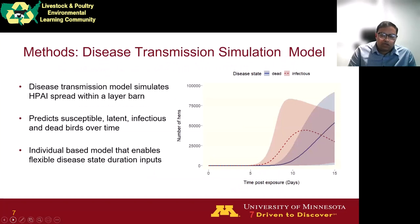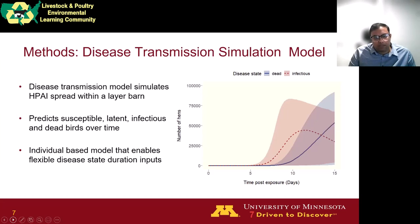We now give a very short overview of our modeling methods. We use a stochastic disease transmission model to simulate how HPAI is spread within a layer barn. The model predicts the number of birds in various disease stages — such as susceptible, latent, infectious, and dead birds — over time. We use an individual-based model that enables flexible disease state duration inputs, such as the bird-level latent period, infectious period, and time to death.